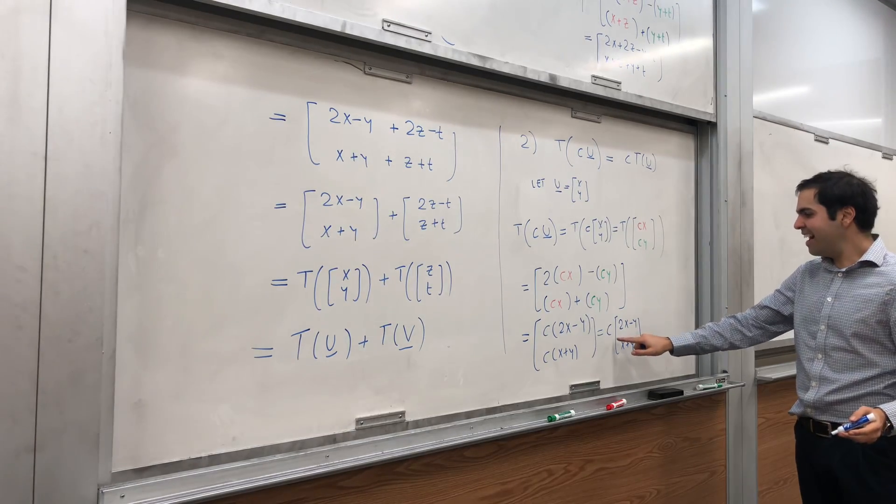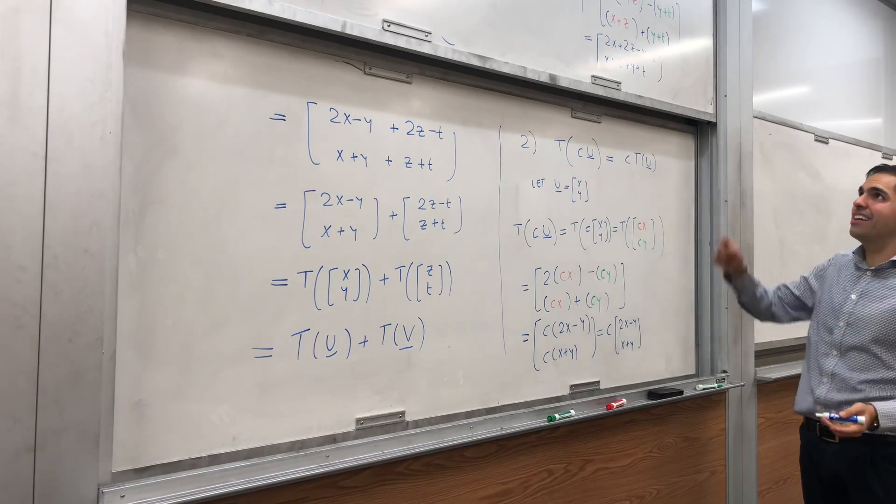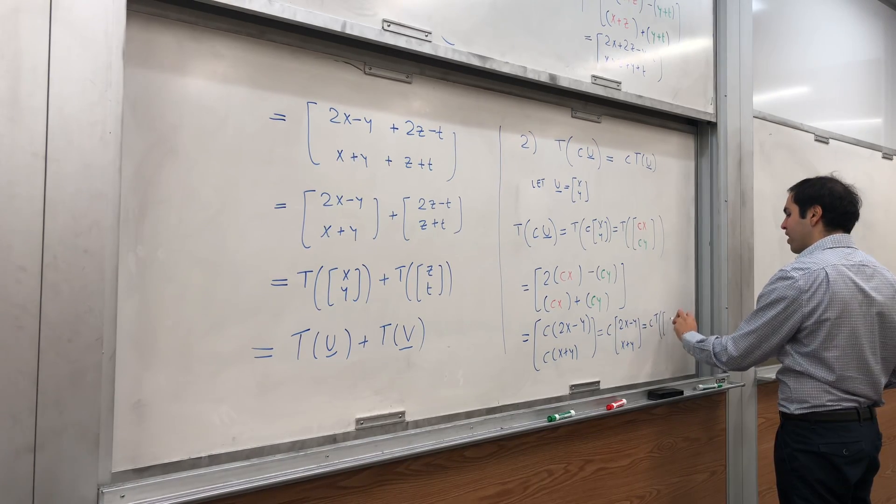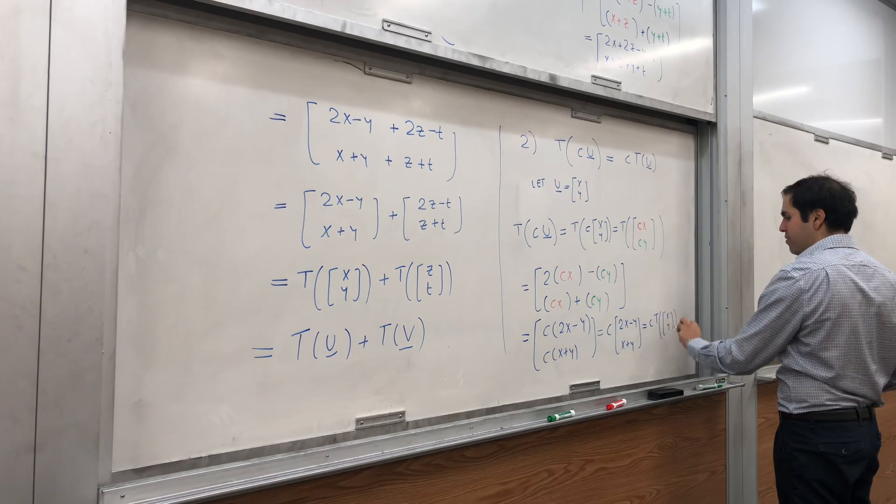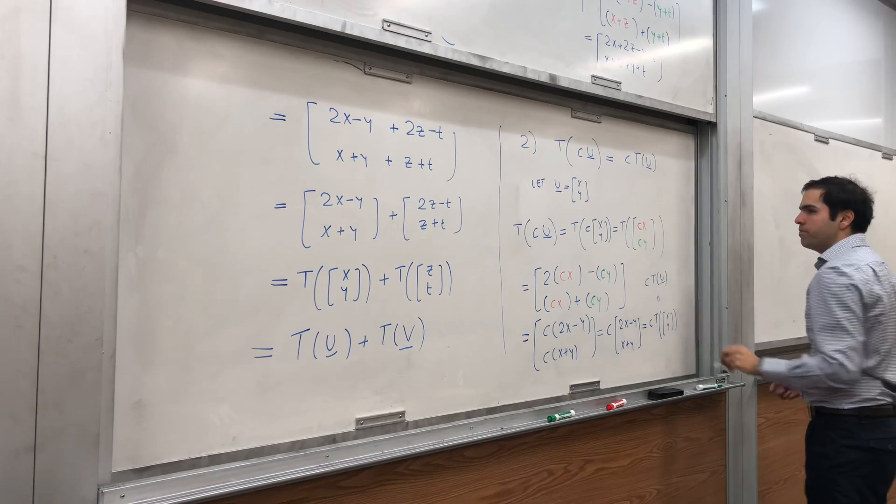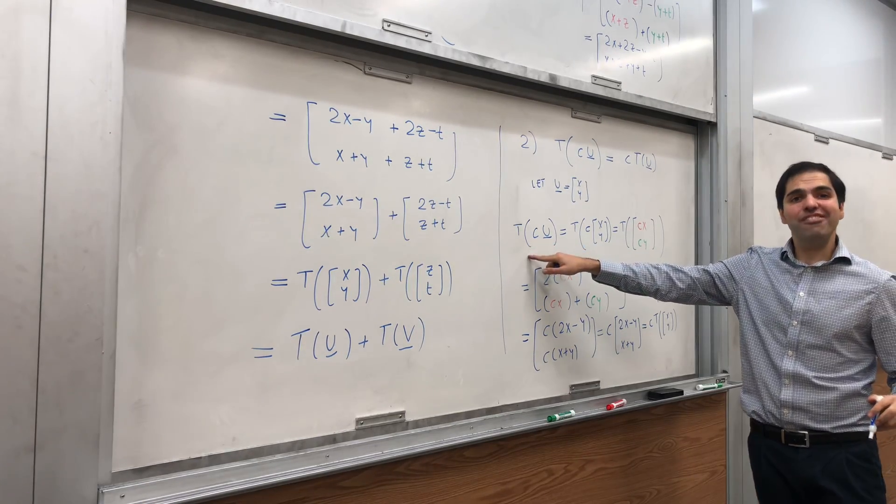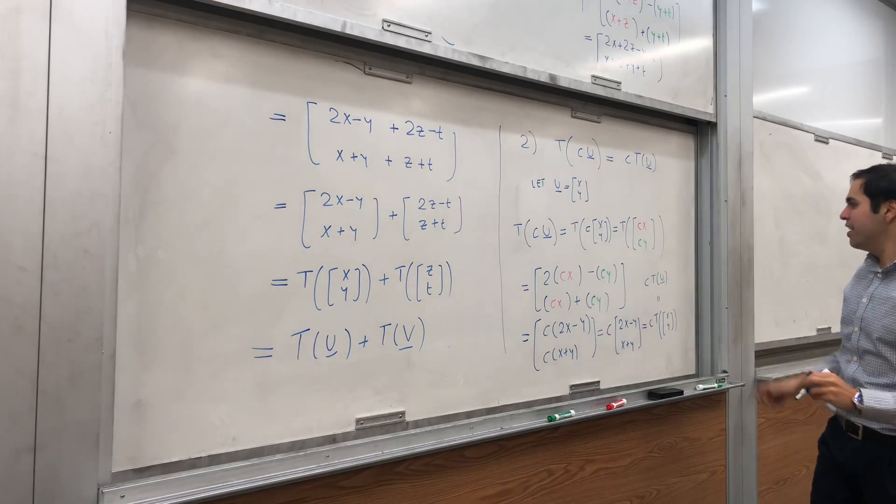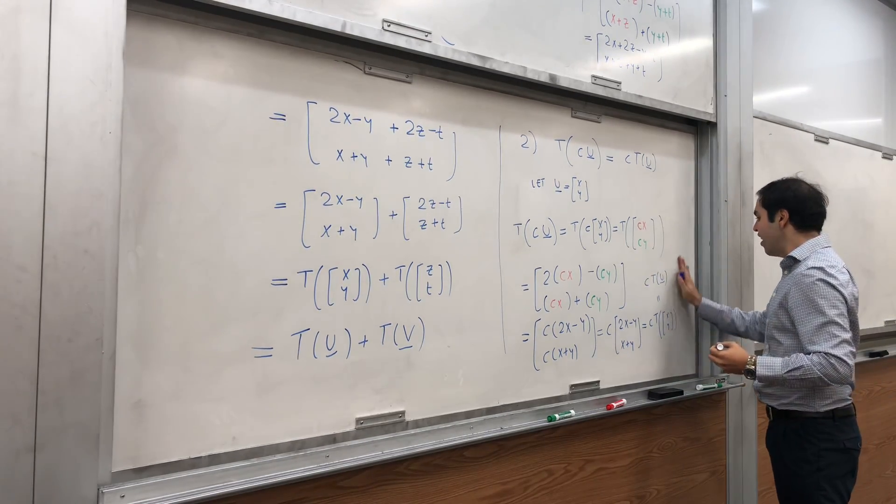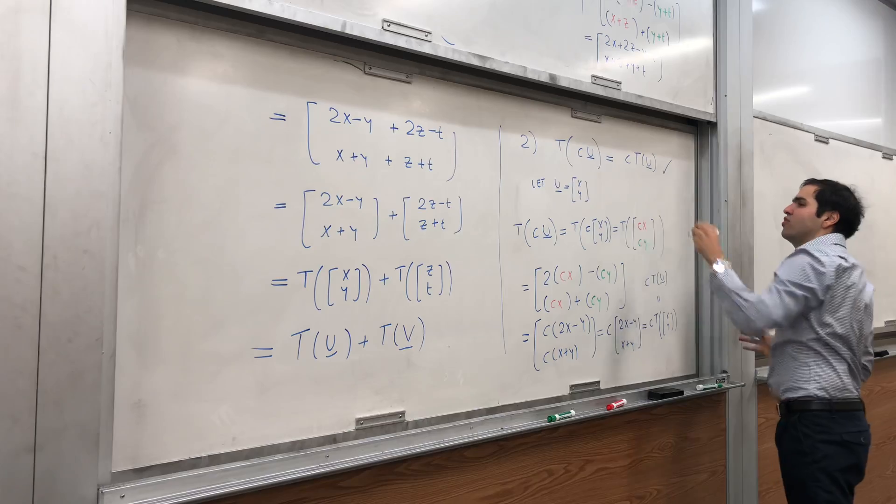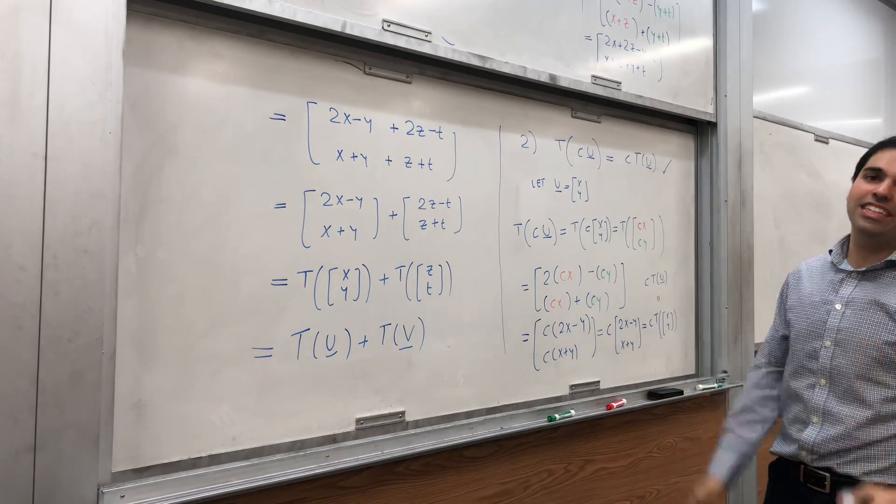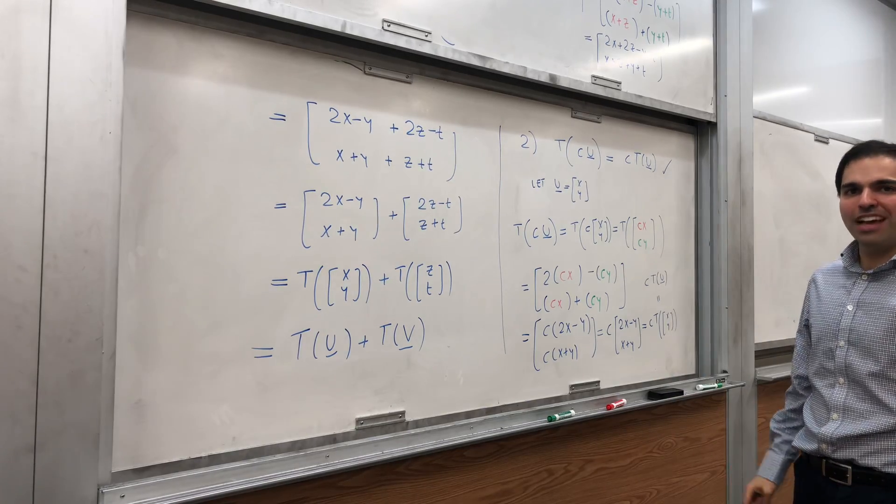And well, what is that? This is just, if you look back at the definition, that is c times T(x, y). Let me put it in the same whiteboard. That's c times T(u). So indeed, you have shown that T(cu) is c times T(u). And because T satisfies the two properties of being a linear transformation, it is indeed a linear transformation. It passed the two tests.